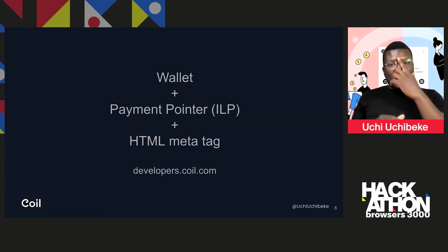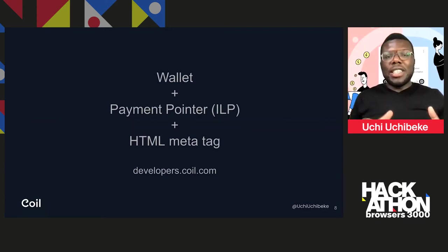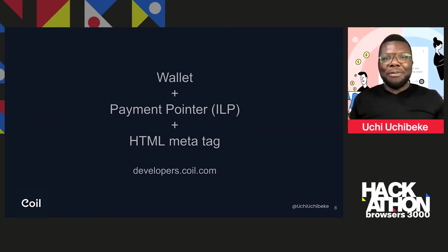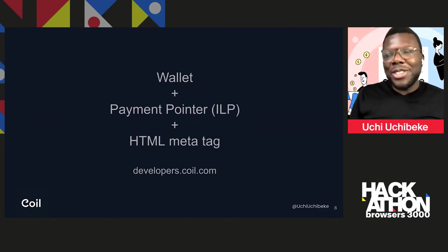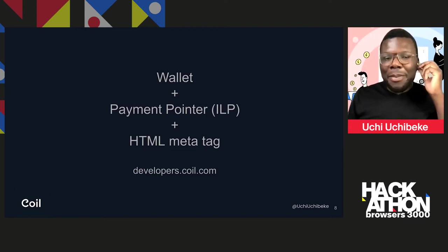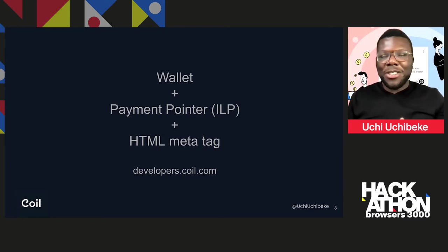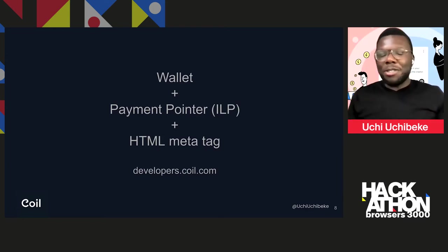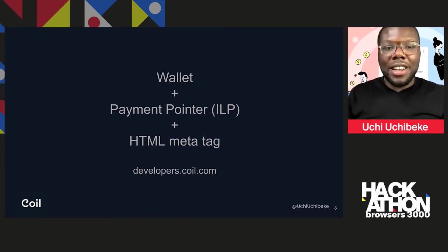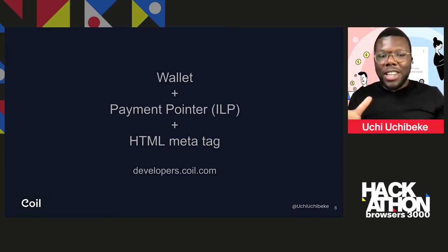There are a couple of components that make this possible. The first is the wallet itself — this is where you receive your payment. You don't want your payment to go to thin air, so you need a way to hold the value or money you're receiving. The money is currency independent — it doesn't have to be in USD, Bitcoin, or XRP. It could be any cryptocurrency depending on the wallet provider you choose. So first, you need the wallet, and you need the payment pointer.